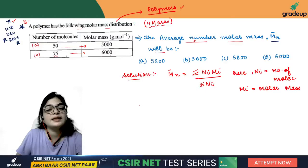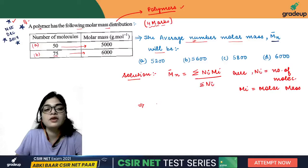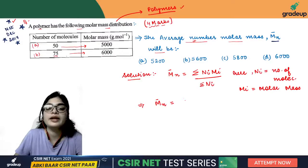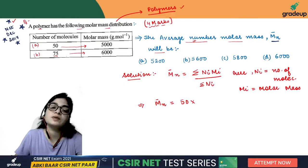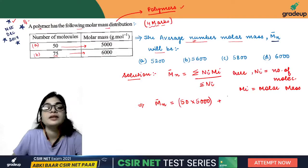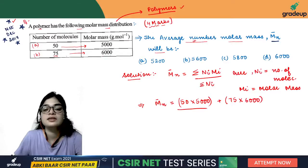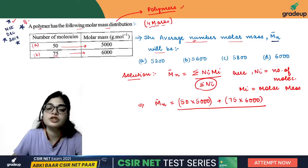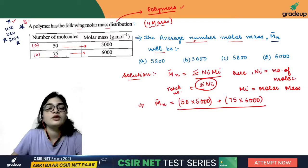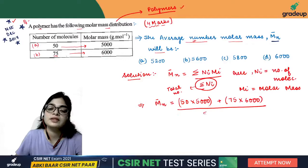How can we solve this? We can easily solve this in two minutes. What is our summation of Ni into Mi? First case, Ni is 50 with corresponding molar mass 5000. Second case, number of molecules is 75 with corresponding molar mass 6000. Summation of Ni, the total number of molecules, is 50 plus 75, which is 125 molecules in total.